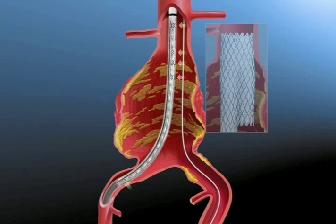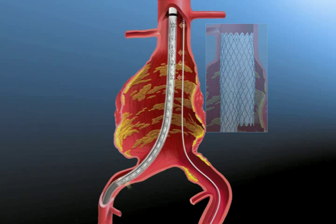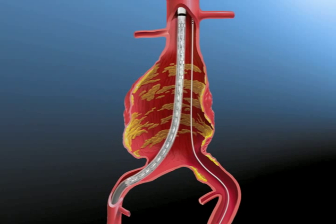For final orientation of the contralateral pant leg or missing iliac limb, rotate the catheter clockwise or counterclockwise so that the gate markers are situated to the right or left side of the guide wire, corresponding to the intended position of the contralateral limb.